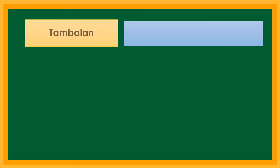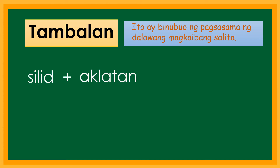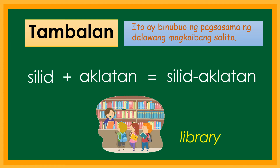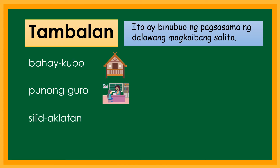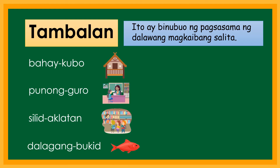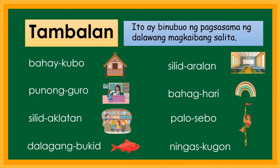Dumako naman tayo sa tambalan. Ang tambalan ay binubuo ng pagsasama ng dalawang magkaibang salita. Halimbawa: silid at aklatan ay silid-aklatan, o sa Ingles ay library. Iba pang halimbawa ng tambalan: bahay-kubo, punong guro, silid-aklatan, dalagang bukid, silid-aralan, bahaghari, palusebo, at ningas-kugon. Ang ningas-kugon ay tawag sa ugali na sa simula lang ay ginagawa ngunit hindi naman tinatapos. Tambalan.